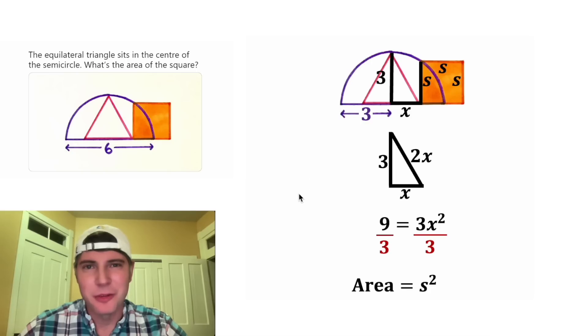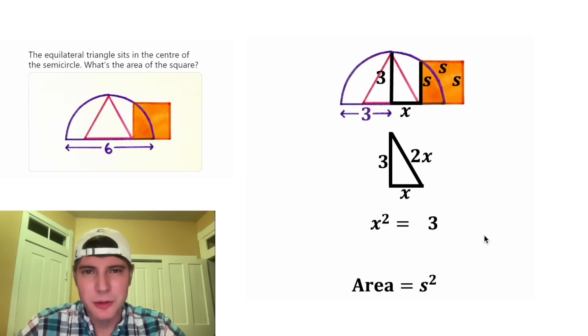Next, we can divide both sides by 3. On the left-hand side, 9 divided by 3 is equal to 3. And on the right-hand side, these two 3s will cancel each other out. So we're left with X squared is equal to 3.